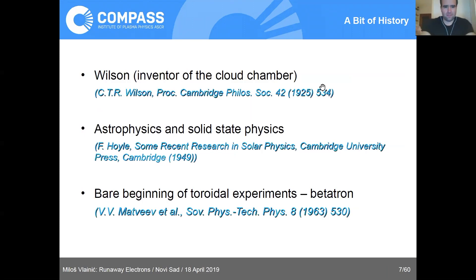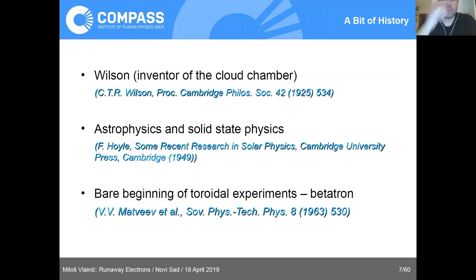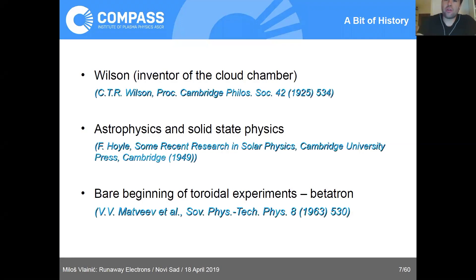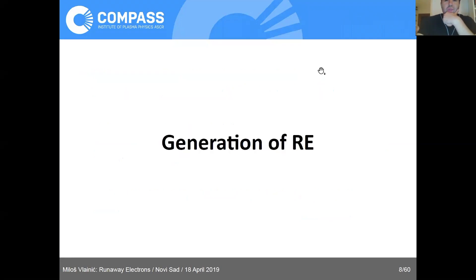A bit of history: the term 'runaway electron' is nothing new and nothing fusion-specific. It was introduced by C.T.R. Wilson — the Wilson chamber guy — when he was explaining thunderstorms and lightning. It also appeared in astrophysics and solid-state physics. By 1949, before fusion became mainstream plasma physics research, and then in the very beginning of tokamak experiments, the Soviets recorded higher electron accelerations. Let's look in more detail at the formal and mathematical description of their generation.